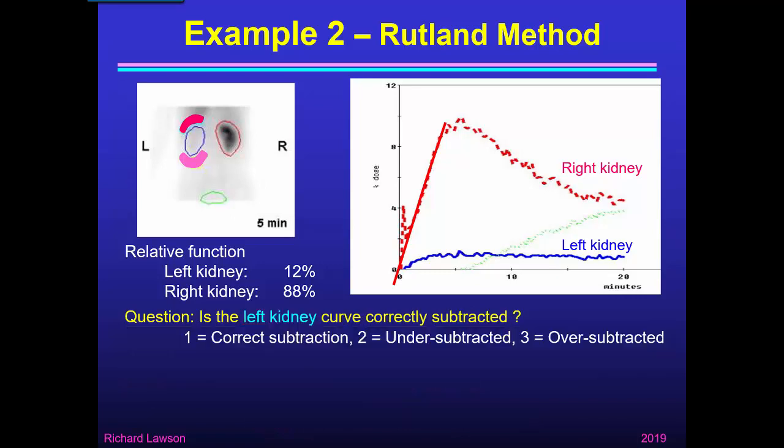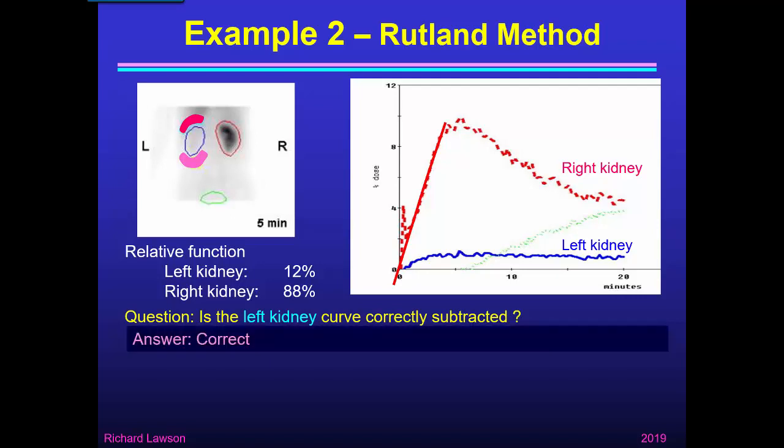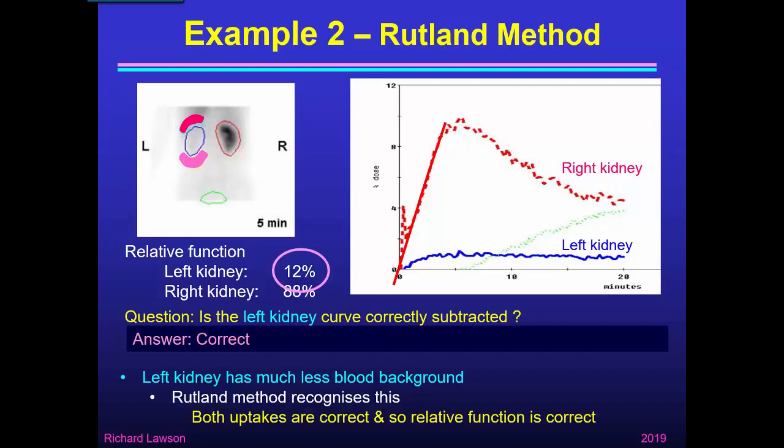What about the left kidney? I think it's quite clear that this is now correct — it does start from zero. The left kidney had much less blood background than the right kidney, but the Rutland method deals with that quite well and takes less blood background from the left kidney than it did from the right. So both uptakes are correct and relative function is correct. The answer of 12% for the left kidney is the best estimate of the relative function for this patient — we couldn't believe the 0% or 3% from the other methods, but here we have correct subtraction for both kidneys.